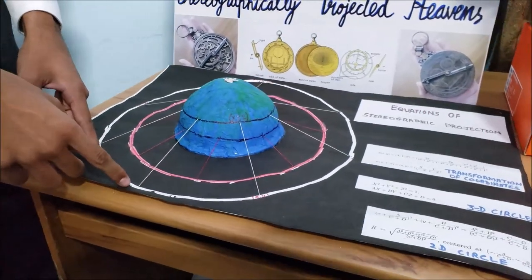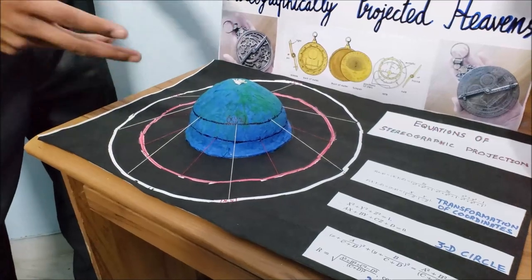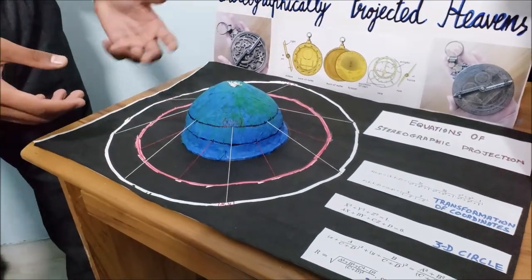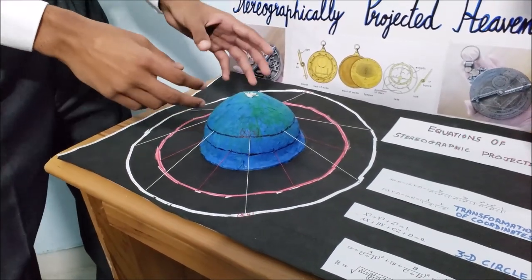Now these threads intersect the hemisphere at two different small circles like this and then these threads extend outwards and intersect the plane to create two more sets of circles. So now what this is essentially showing you is how these two circles are a stereographic projection of the small circles on the hemisphere.